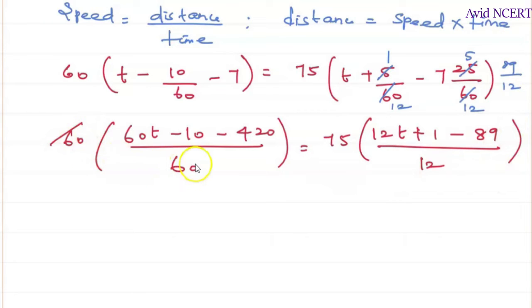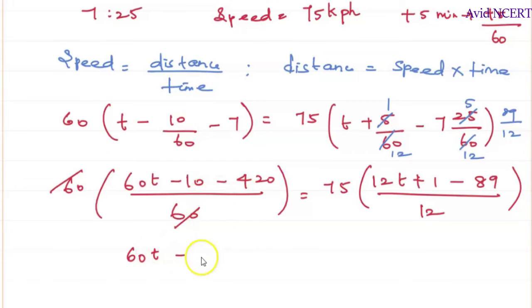12 into t is 12t plus 1 minus 89. So this 60 and this 60 gets cancelled. So here it is 60t minus, minus 10 minus 420 is minus 430.